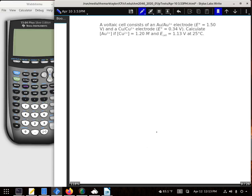A voltaic cell consists of a gold and gold 3 plus electrode and a copper and copper 2 plus electrode. And we're going to calculate the gold's concentration if the copper's concentration is 1.2 molar and it has an E of the cell of 1.13.